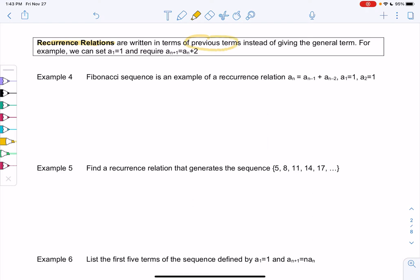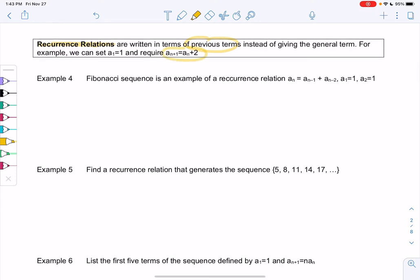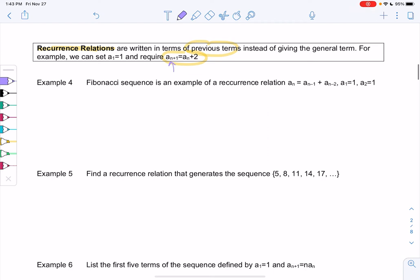An example is maybe we set a_1 equal to 1, and then the next term, a_{n+1}, would be the previous term, a_n plus 2. So that's a recurrence relation.